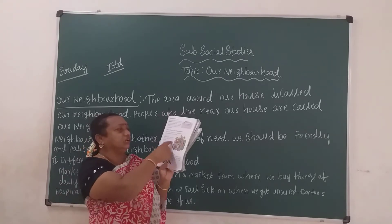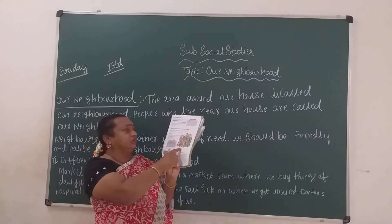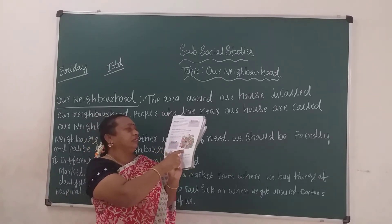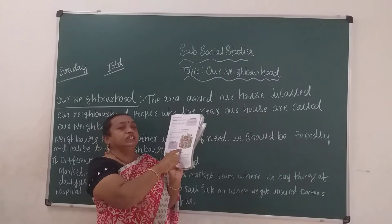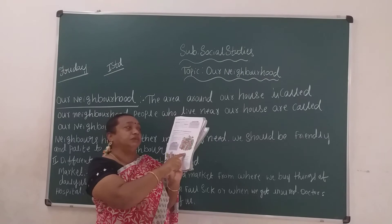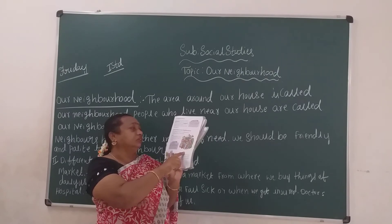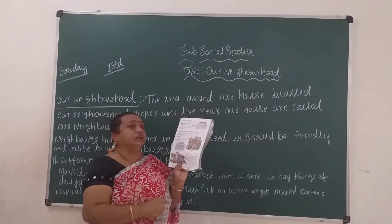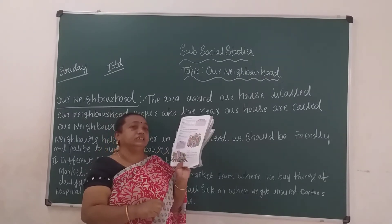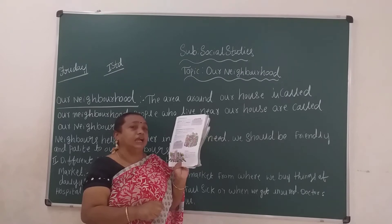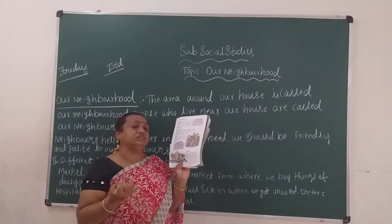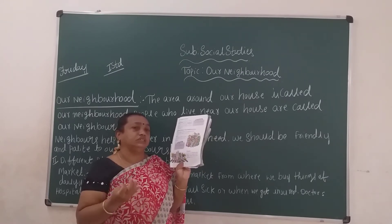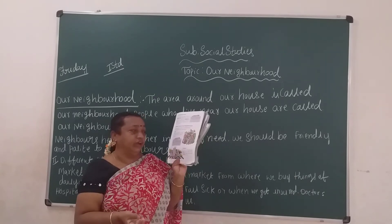Look at this picture, children. What is this? Market. There are many shops in a market. We can see many shops in the market where we buy daily things — fruits, vegetables, groceries, and more.